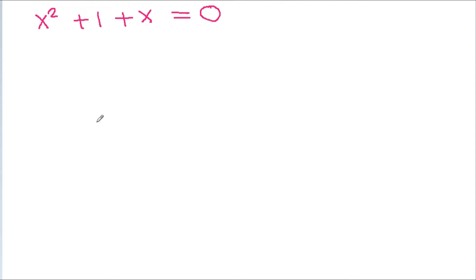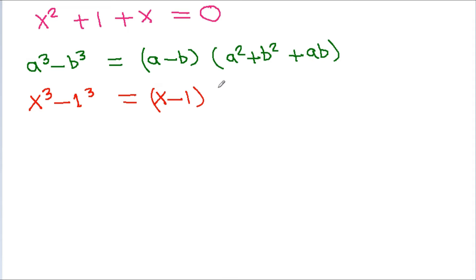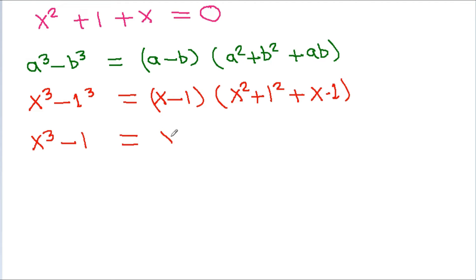We know that a cubed minus b cubed is equal to a minus b times a squared plus b squared plus ab. So x cubed minus 1 is equal to x minus 1 times x squared plus 1 plus x, which means x cubed minus 1 equals x minus 1 times x squared plus x plus 1.